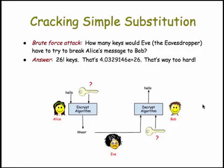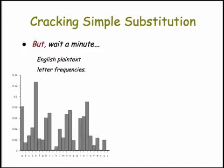So is simple substitution cipher uncrackable? Well, let's wait a minute — it's not. One of the pieces of information we can use in analyzing simple substitution is the letter frequencies of the English language, or any language. If you looked at a histogram of English letter frequencies, you'd see that E is the most frequent letter at just above 12%, T is the second most frequent at around 9%, and A is very frequent at more than 8%, and so forth.